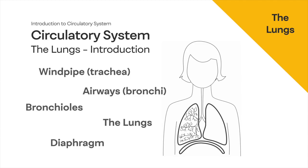Here is an illustration of a torso of a human body — this is where the lungs live. Lungs live within our chest, and the system that helps the lungs work has different parts named using the labels on the left. Within our lungs and within the system that makes them work, we've got a windpipe, airways, the lungs themselves, bronchioles, and a diaphragm.